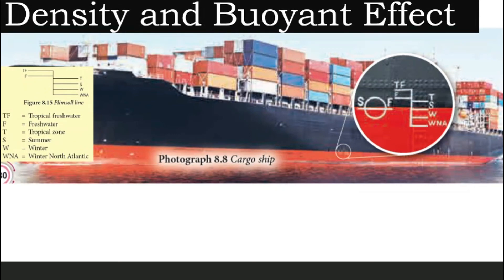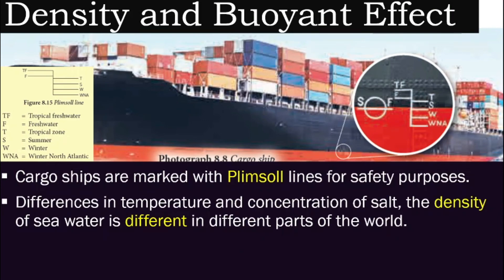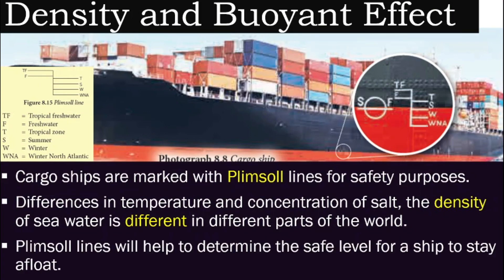So how do we use density and buoyant effect in daily life? This is especially important for cargo ships. If you notice, every cargo ship is marked by lines called Plimsoll lines. These lines are very important to sailors because different parts of the world have seawater with very different temperatures and salt concentrations, meaning the density of seawater also differs. The Plimsoll lines help sailors determine whether the ship is safe to stay afloat in certain parts of the world.